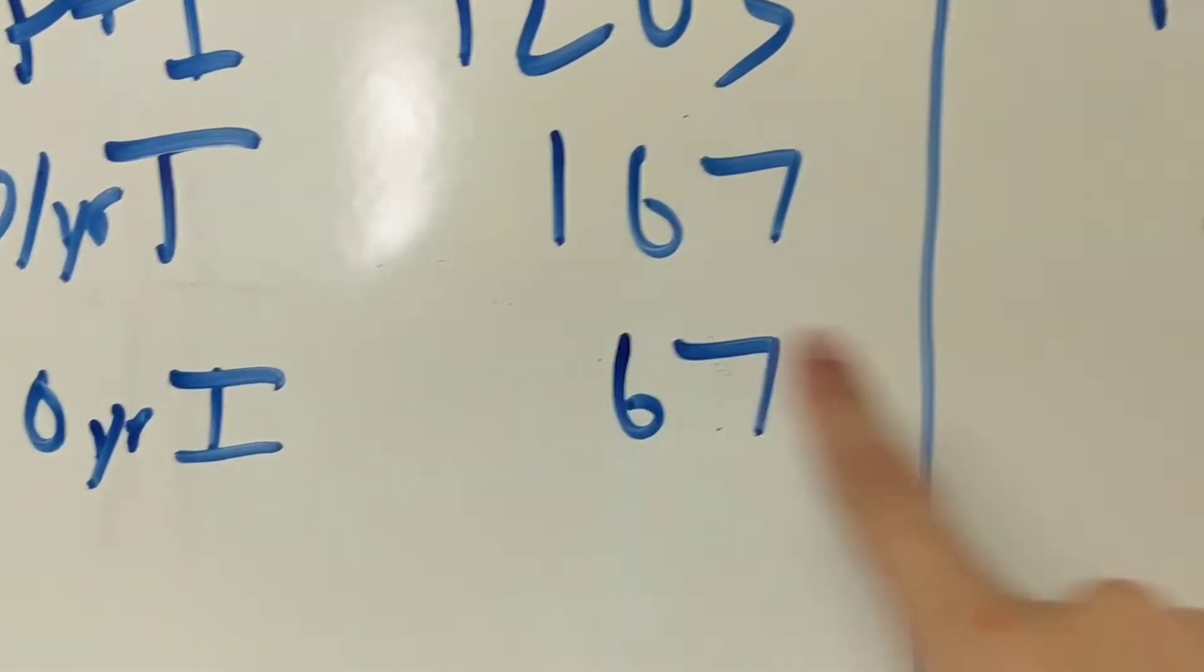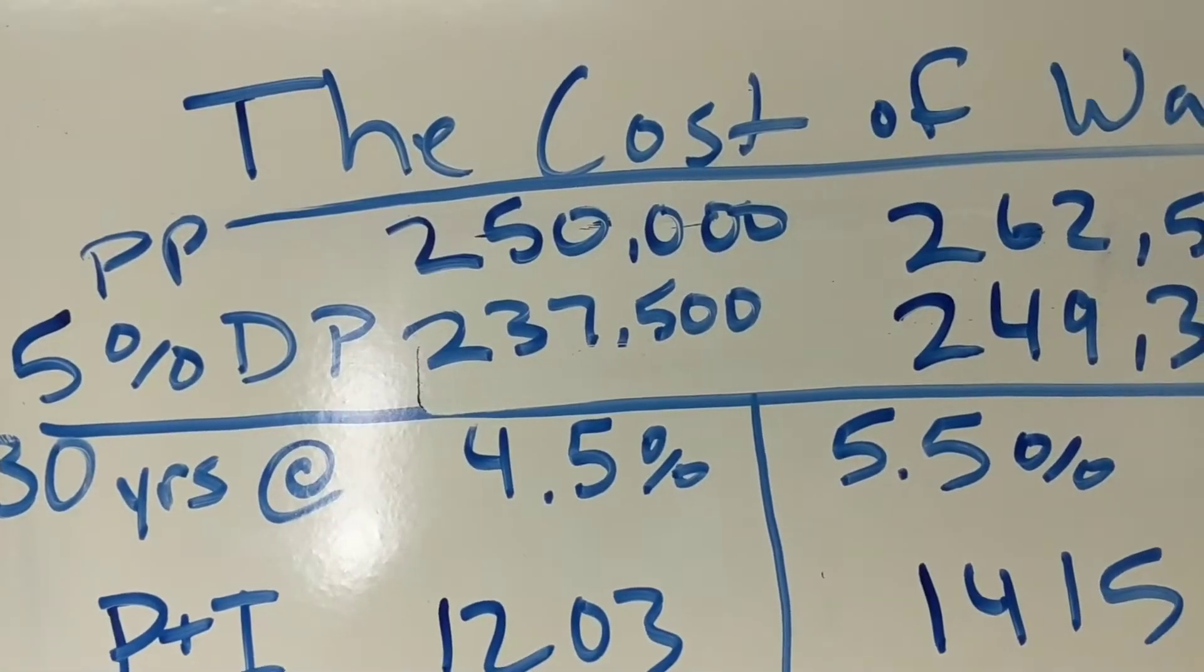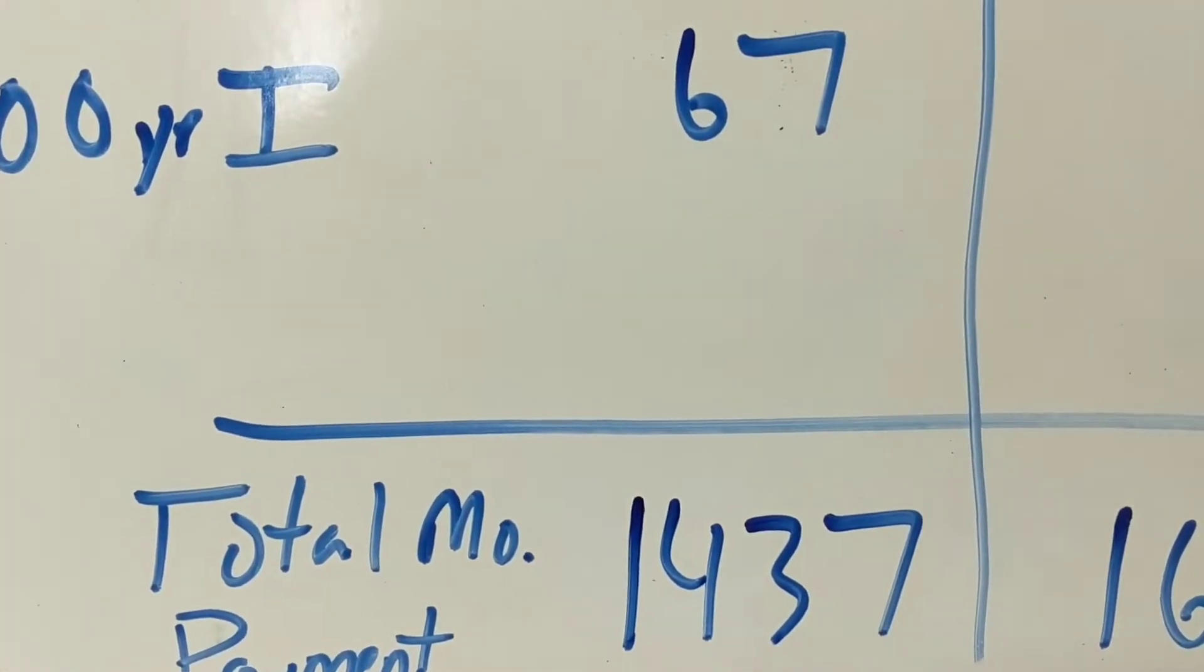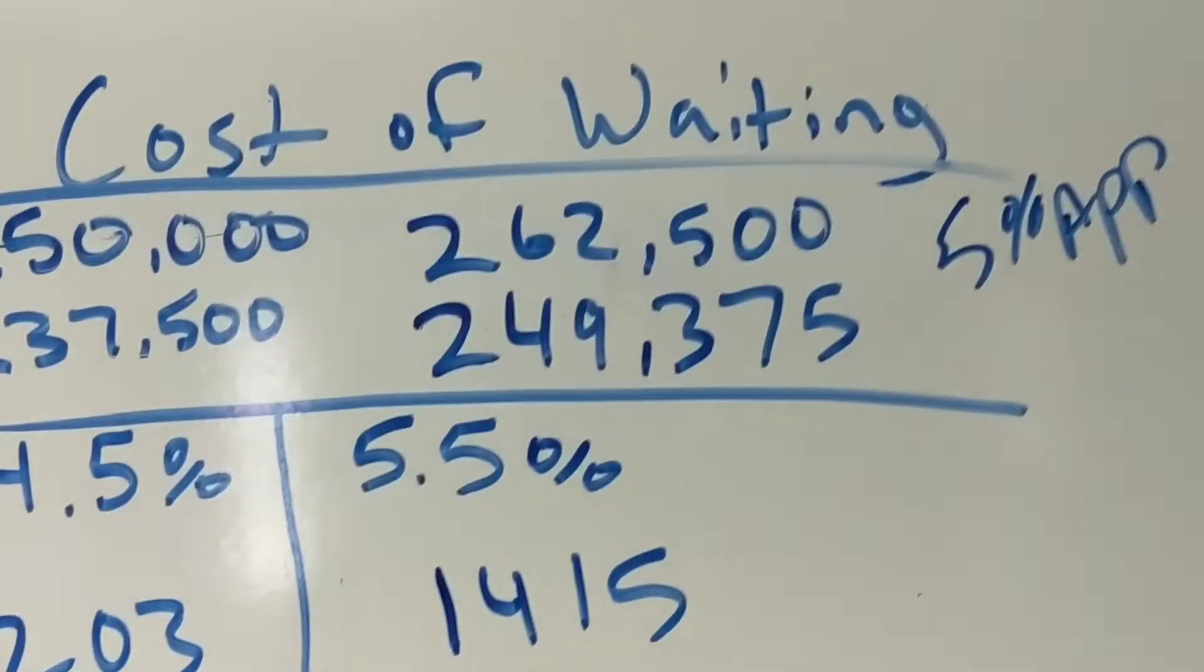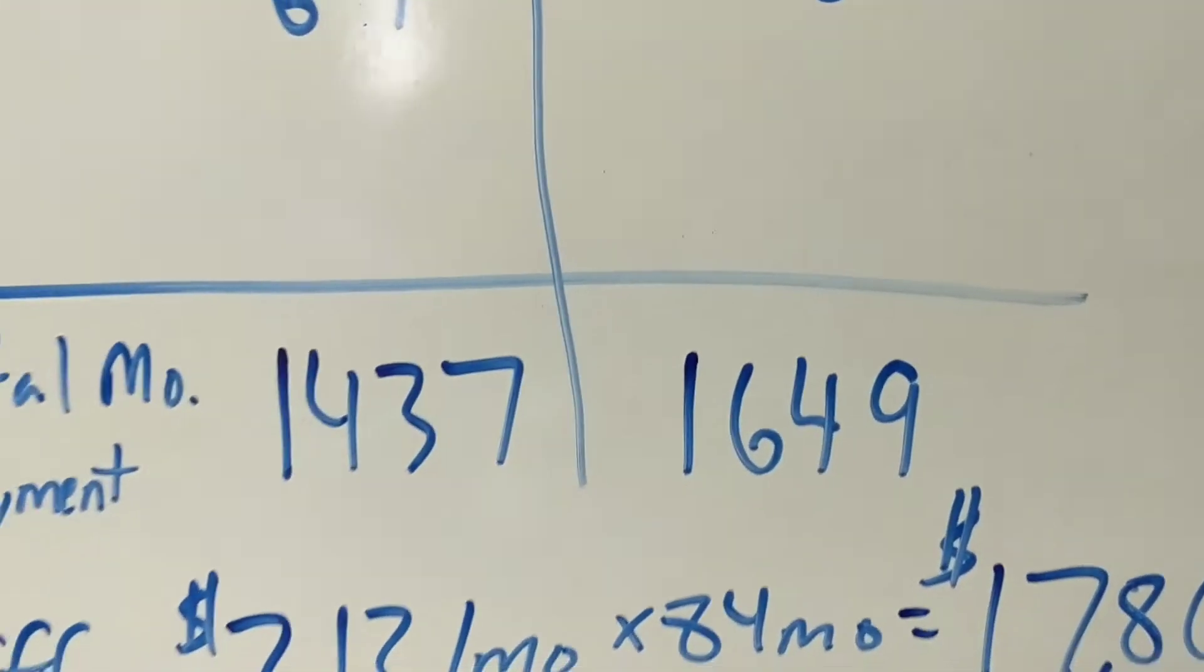Your taxes and insurance don't change, so that makes your total payment under scenario 1, financing $237,000 at 4.5%, a total payment of $1,437 a month. Versus scenario 2, $262,500, financing $249,000 at 5.5%, $1,649 a month.